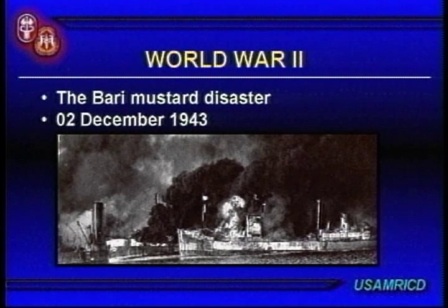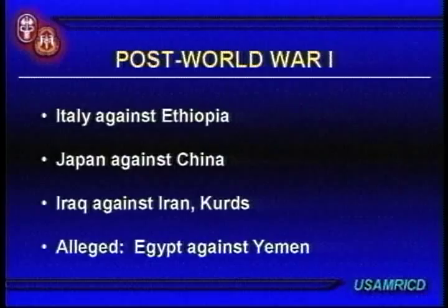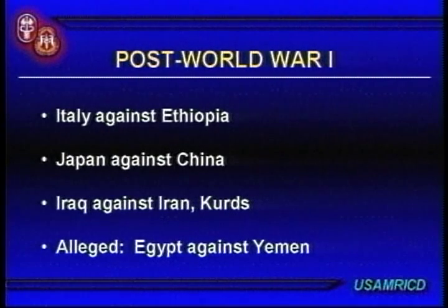Even though there was no actual battlefield usage of chemical agents in World War II, there was the Bari Harbor accident — about 600 U.S. casualties and a little over 80 fatalities, with no idea how many civilian casualties. After World War I, there have been chemical battlefield uses: the Italians used mustard against the Ethiopians, the Japanese almost certainly used lewisite against the Chinese, the Iraqis used it against the Iranians and the Kurds, and it's alleged that Egypt used it in Yemen.